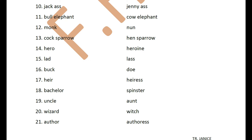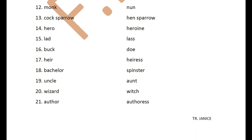Heir / heiress. An heir is the one who is next in line to inherit everything. Like after Dhirubhai Ambani died, his two sons Mukesh and Anil Ambani were the heirs to the Ambani empire. Bachelor / spinster — someone who is not married. A male is called a bachelor and a female is called a spinster. Uncle / aunt. Wizard / witch. Author / authoress.